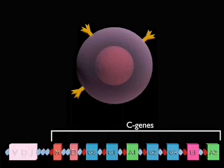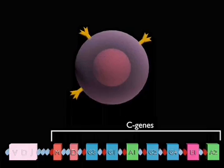These are called C genes. C genes for the other immunoglobulin classes lie downstream of those for the IgM.